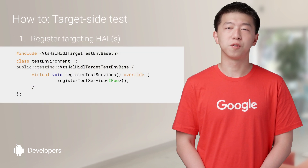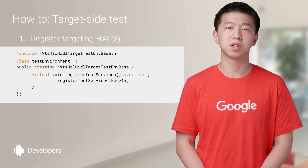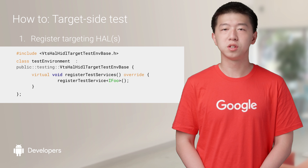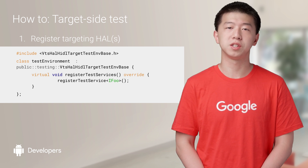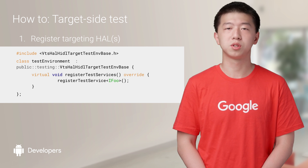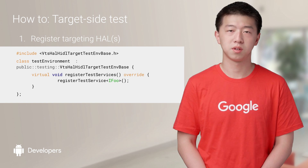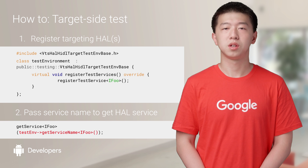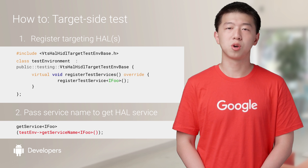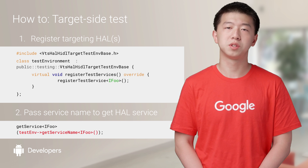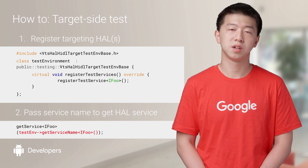To enable this feature for target-side HAL tests, it requires a few changes to the existing test code. The first thing we need to change is to define a test environment based on our VTS-based environment and register all HAL services which we want to test. The second change is to call the provided getServiceName method, which will give us the corresponding service name for the particular HAL in the current test, and pass the results to the getService method.